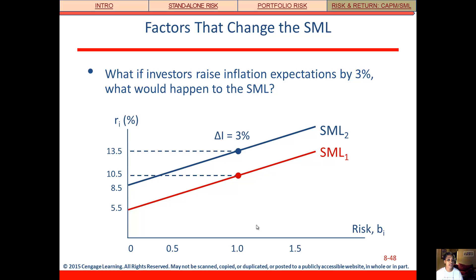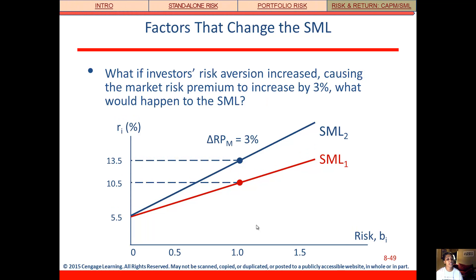What could change the security market line? If investors raise inflation expectations, that raises the T-bill rate by the same amount, shifting the entire SML upward in parallel. If investors become more risk-averse, they demand a higher return for the same risk — the line stays at the same T-bill intercept but becomes steeper, not a parallel shift.